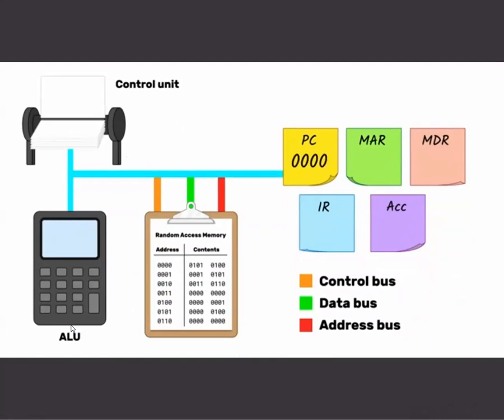The program counter starts at 0000. This means that the first address in RAM that the computer will look for an instruction is at 0000. The computer needs somewhere to store the current address in RAM that it is looking for. This is what the memory address register is for. 0000 is therefore copied into the MAR.